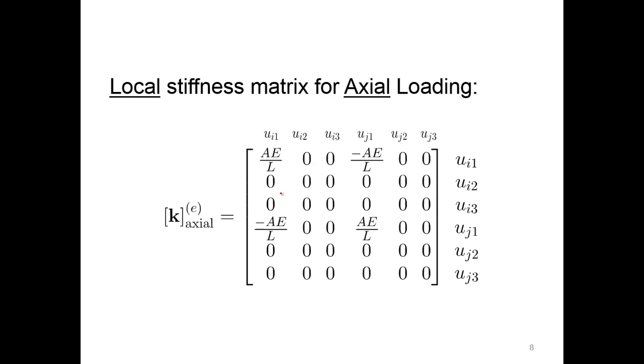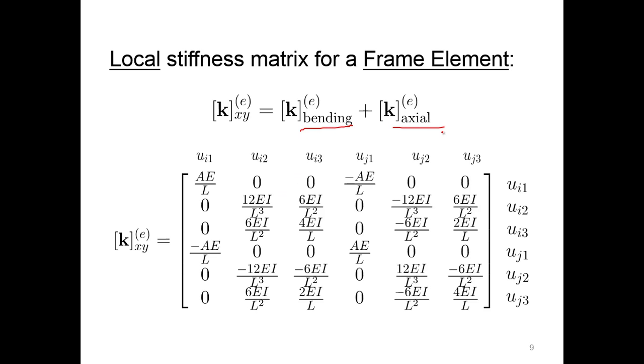But then if we look at the local stiffness matrix for axial loading, that's all we have. We don't have any displacement laterally or rotation wise. So we're gonna combine those now and just add those together. For a frame element, we're just gonna add the bending to the axial, just add them up and put them together.